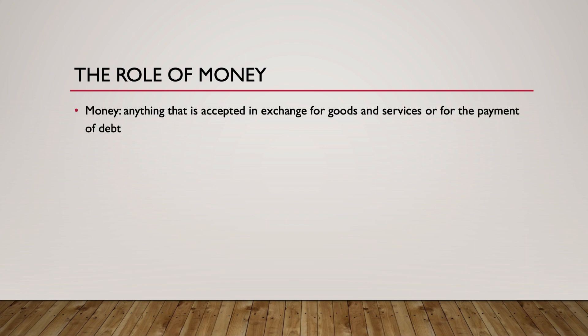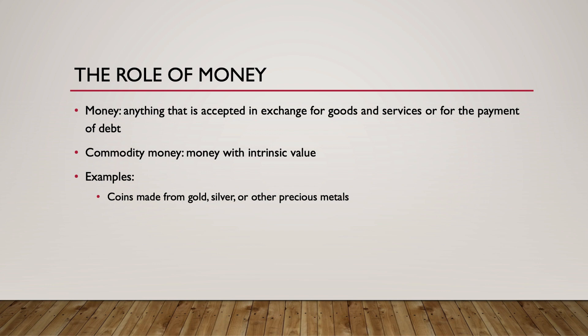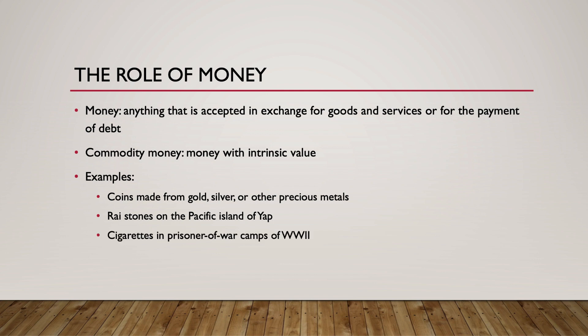Money is anything that is accepted in exchange for goods and services, or for the payment of debt. Historically, many societies have used commodity money in the form of coins made from gold, silver, or other precious metals or stones. On the Pacific island of Yap, the inhabitants make purchases by exchanging ownership of large circular stones, called ray stones. In the prisoner of war camps of World War II, prisoners exchanged cigarettes for goods and services.